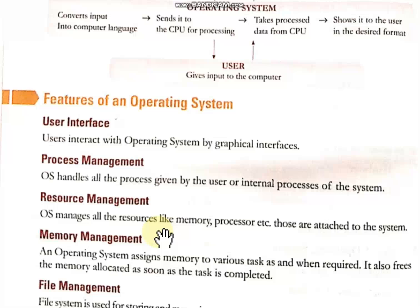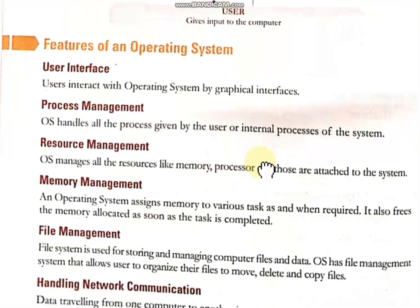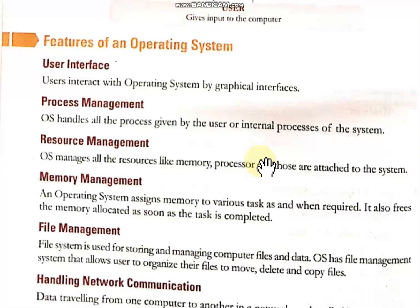Second is process management. Everything you do on a computer is a process, and the operating system handles all those processes. Third is resource management. Resources are things attached to the system — for example, memory, processor, printer, scanner. The operating system manages all these resources.